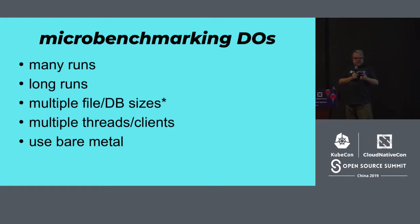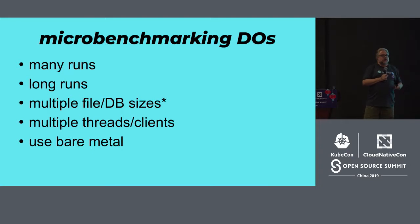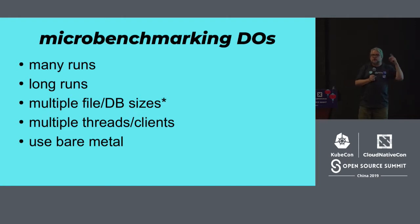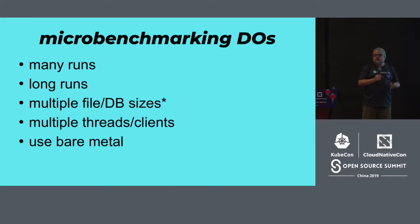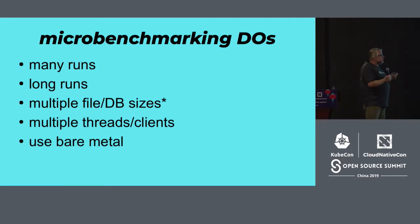Part of my goal here is not to show you my numbers, because my numbers are not your numbers — your hardware, application, and stack are different. What I want you to get is: you can do this yourself, and you should, particularly before deploying a new platform in production. A few tips: when running microbenchmarks, do a bunch of runs. Don't run it once and say that's how it is, because there's a certain amount of randomness and a single run may just reflect that randomness.